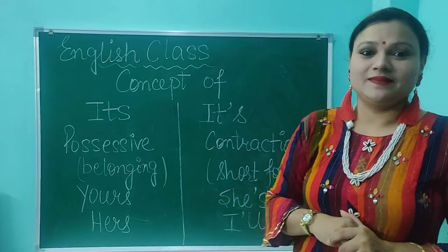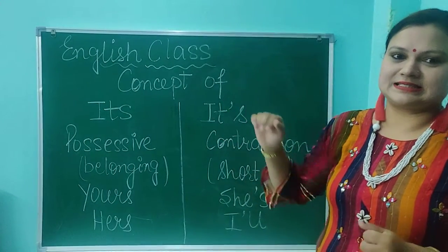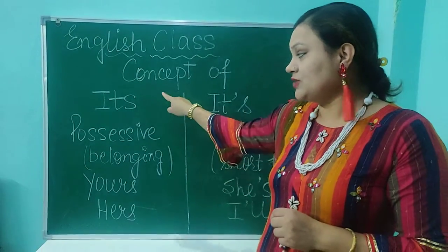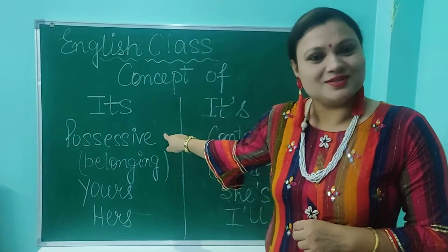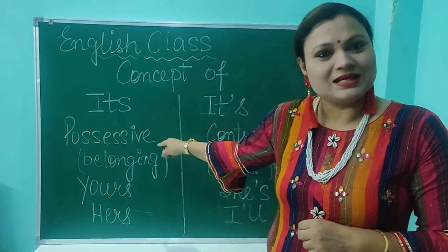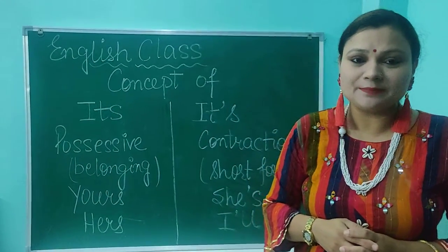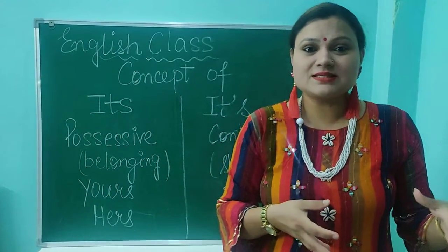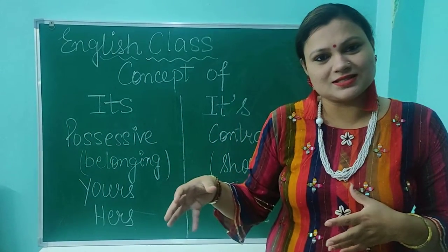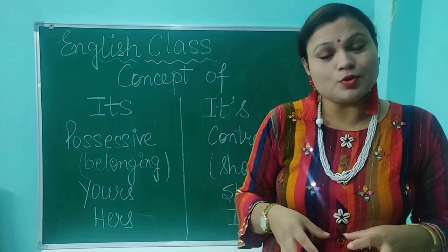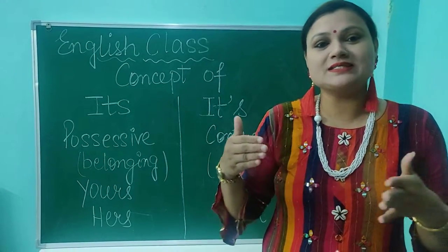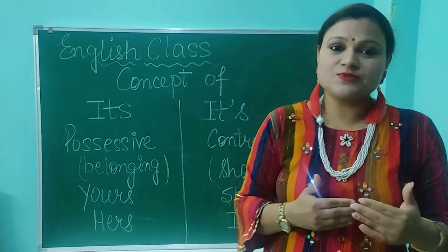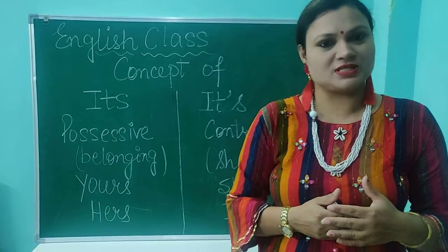So let's check here. The first 'its' — I-T-S without an apostrophe mark — shows possession, belonging, and ownership. For example, when we say 'this bag is yours,' 'this pen is hers,' 'this box is mine' — all these are showing ownership and belonging of someone. That is why these words are known as possessive.